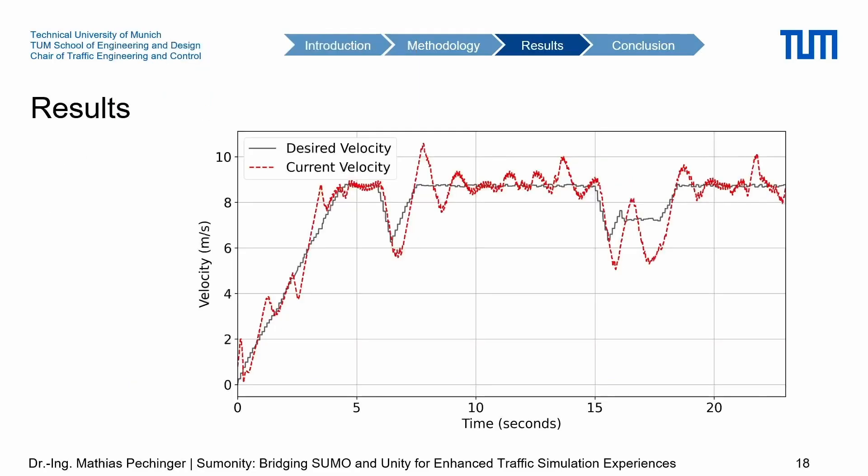The desired velocity is the velocity of the vehicle in SUMO, and the current or actual velocity is the velocity in Unity. A real human driver wouldn't drive at exactly 8.33 m/s — they'd oscillate slightly around the target value. We can also see the positional controller has slightly more weight than the velocity controller, since we use the SUMO vehicle velocity mainly to smooth the control rather than as the primary reference signal.